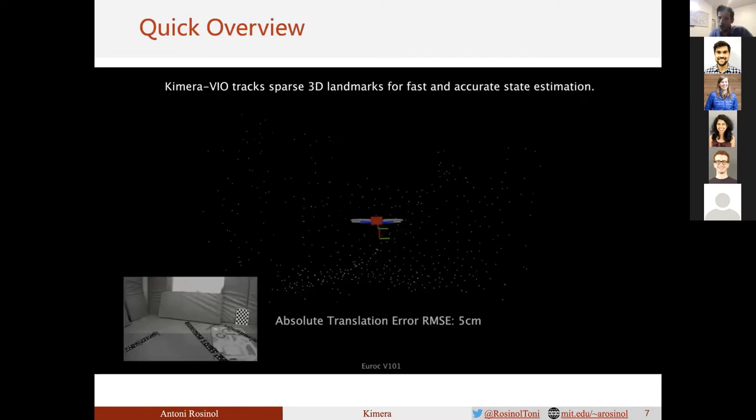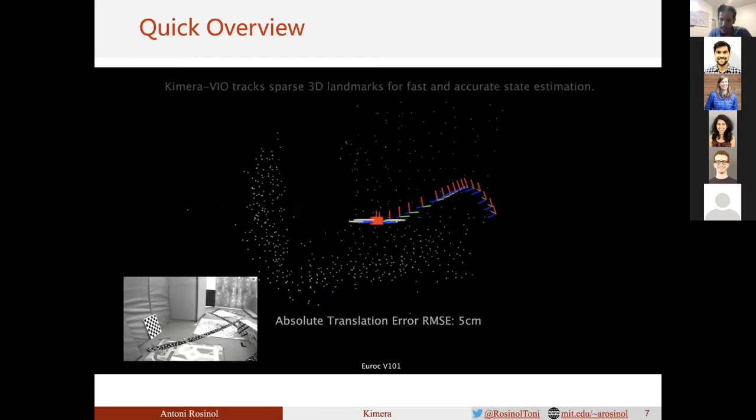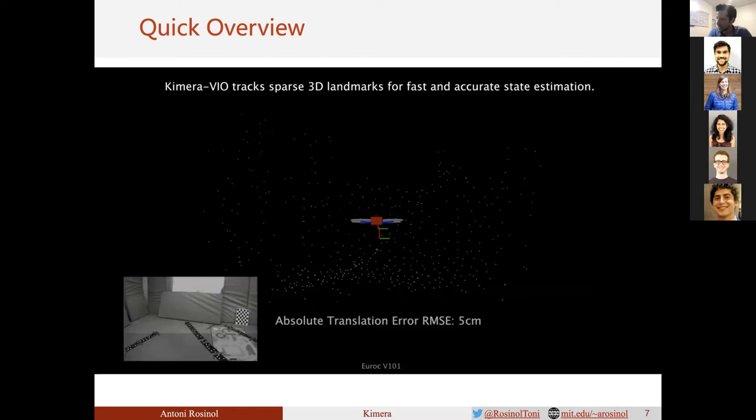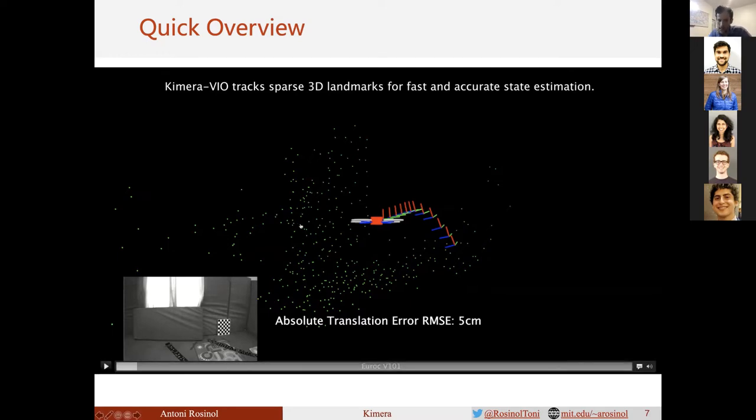Let's have a quick overview of the different modules in Kimera using the EuRoC dataset, which features a drone flying indoors. At the bottom left, you can see the image the drone is seeing. In the center, you can see the position and orientation of the drone estimated by Kimera. The green dots are sparse 3D landmarks that Kimera tracks for localization. As you may notice, the 3D map is sparse.